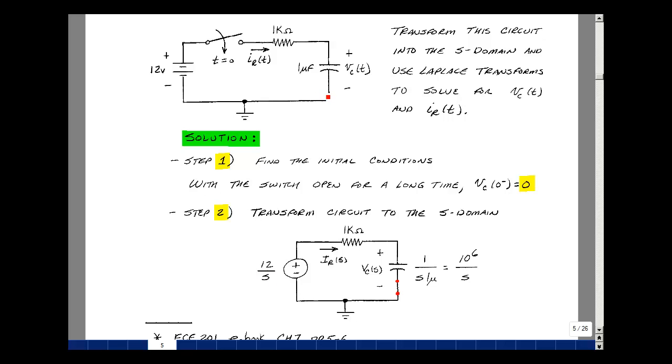Now the capacitor has a 0 initial condition, so all we have is just the impedance of the capacitor, which is 1 over SC. So 1 over 1 microfarad would be 10 to the 6th over S.